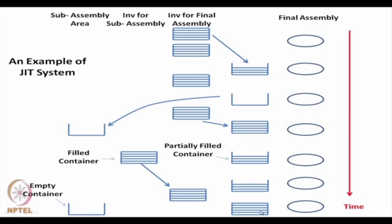After about 10-15 minutes, the second container becomes empty and is passed to the sub-assembly area once again, while the newly filled container is available for final assembly work. This cycle continues. At any time there is only one container of sub-assemblies available near the final assembly — that is the stock. So there is no need for much work-in-process inventory. This is the concept of just-in-time inventory.